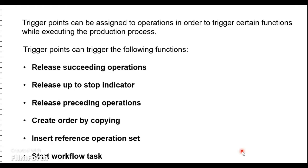Trigger points will basically be assigned in the routing. We will have a brief overview of these subtopics on the usage of trigger points. The first is the release of succeeding operations — with this function you can release all operations that follow the operation which has the trigger point assigned to it. Then we have the release up to stop indicator, which allows you to release all operations up to a specific point, including the next operation for which the release stop indicator has been set.